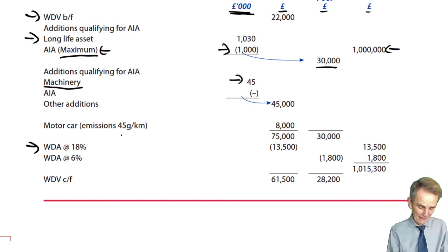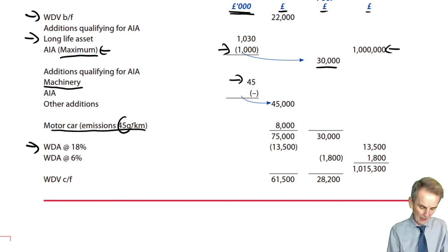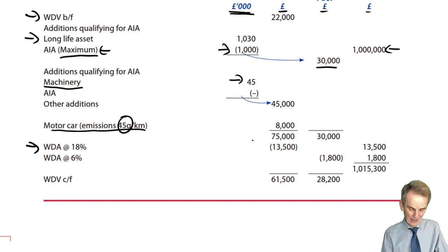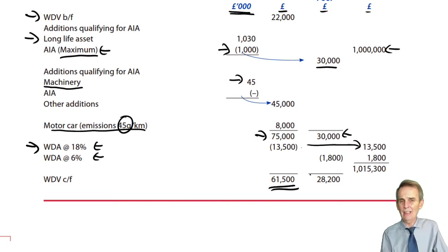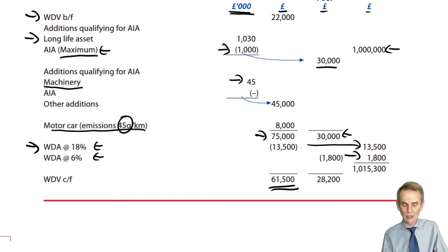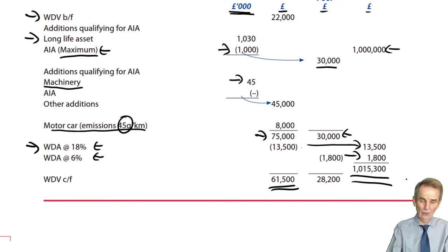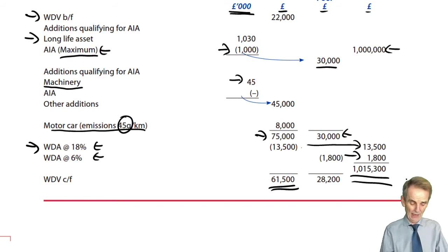We then allocate the motor car bought in the period — with that lower level of emissions, it was main pool expenditure, not special rate pool. On your balances in your two pools, take your WDA at 18% for main pool and 6% for special rate. Those figures are deducted in deriving the tax written down value to carry forward and allocated into our allowances column, where we'd have well over £1 million worth of capital allowances available.